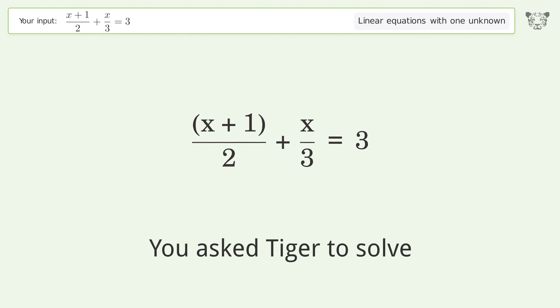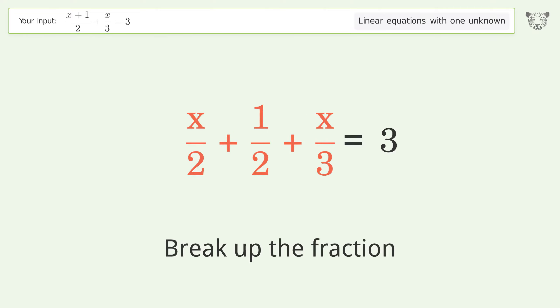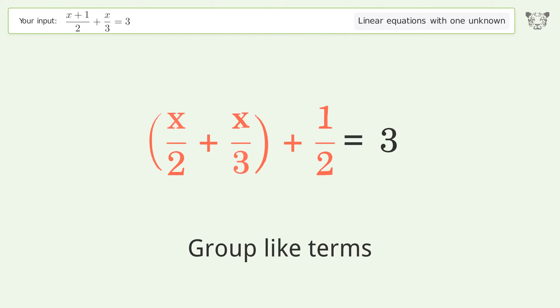You ask Tiger to solve this equation dealing with linear equations with one unknown. The final result is x equals 3. Let's solve it step by step: simplify the expression, break up the fraction, group like terms, and group the coefficients.